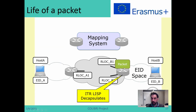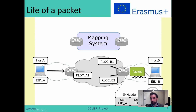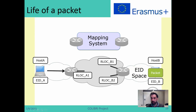Eventually the packet will reach the tunnel router. What the router will do is decapsulate it — it will strip all these headers and leave only the original packet, which again has source address EAD A, destination address EAD B, plus the data. Finally, the packet will reach the destination. This is pretty much how LISP works.